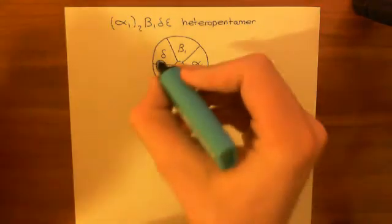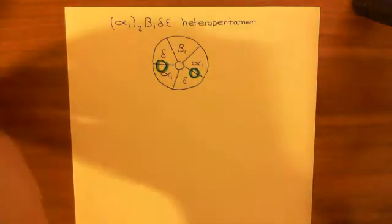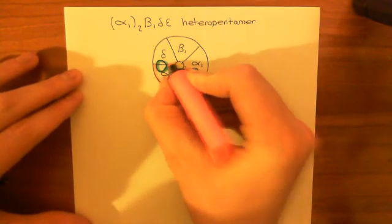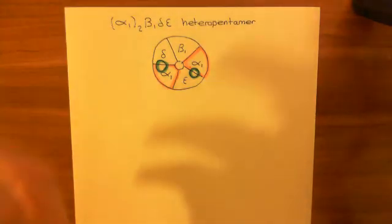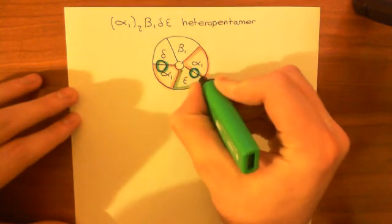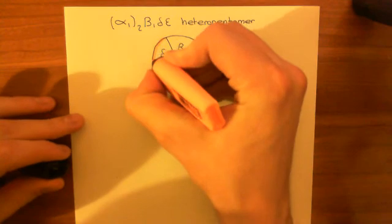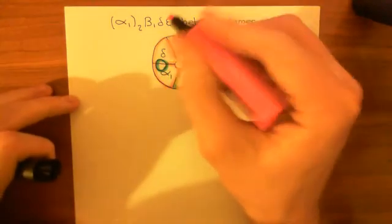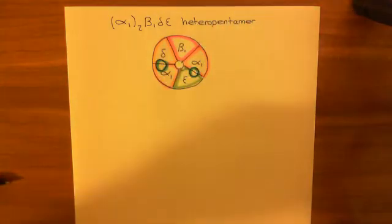Let me color this in: in blue, these are the acetylcholine binding sites. In red, we'll outline the alpha-1 subunits — there are two alpha-1 subunits. In green, we'll have the epsilon subunit, wedged between the two alpha-1 subunits. In orange, we'll have the delta subunit. And in purple, the beta-1 subunit, which does not take part in any of the binding sites in the alpha-1,2, beta-1, delta-epsilon receptor.